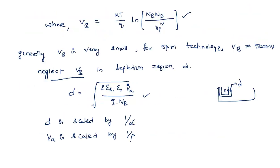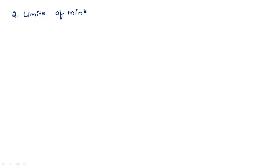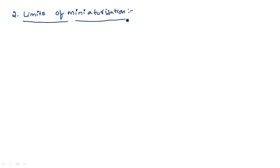Now we are going to see the limits of miniaturization and the limits of interconnect and contact resistance. Miniaturization means reducing the size of the transistor. As the number of transistors doubles every two years on an integrated circuit, the transistor size is reduced — that is done through miniaturization. The size of the transistor is usually defined in terms of its channel length.